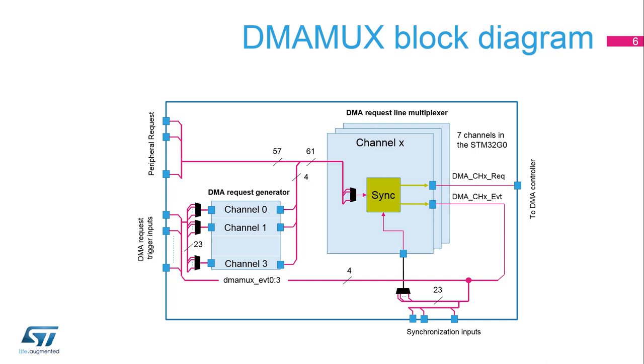Do not confuse DMA request generator channels (0 to 3) with DMA request line multiplexer channels (1 to 7).